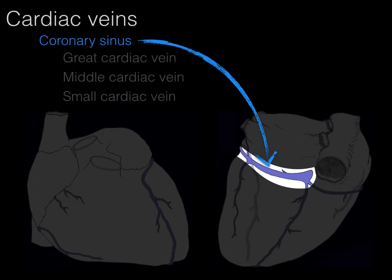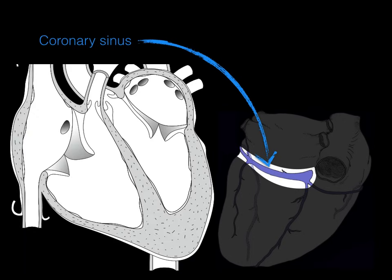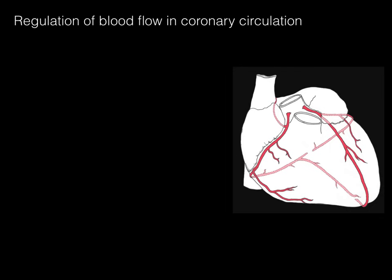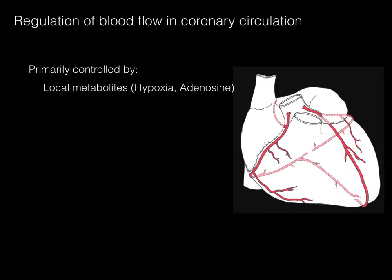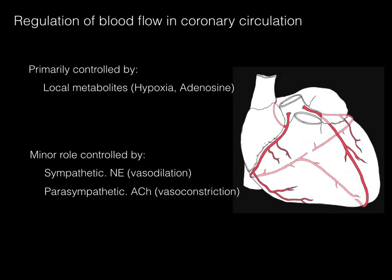The coronary sinus opens into the right atrium, draining blood from the cardiac veins back into the heart. Regulation of blood flow in the coronary circulation is primarily controlled by local metabolites — if the heart uses more oxygen through extra contraction, a slight hypoxic state causes vasodilation of coronary arterioles to increase blood flow to the myocardium. Adenosine is also a local metabolite that dilates coronary arterioles. There is a minor role of sympathetics, which vasodilate, and parasympathetics via the vagus, which vasoconstrict, but those are very minor roles.